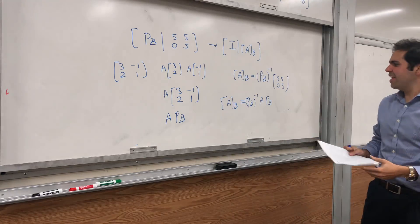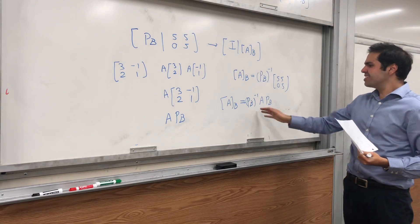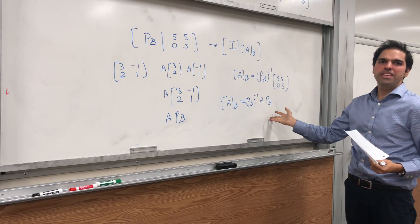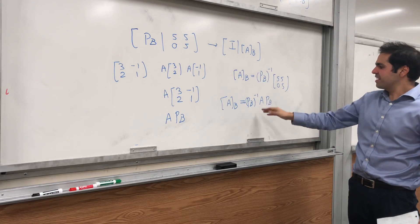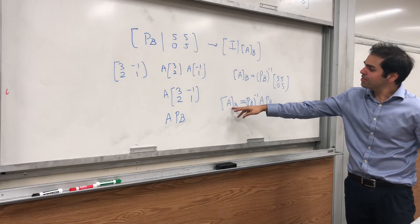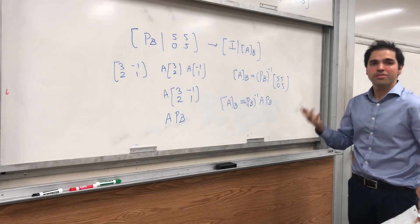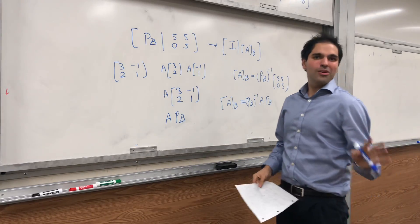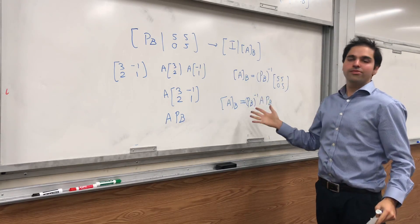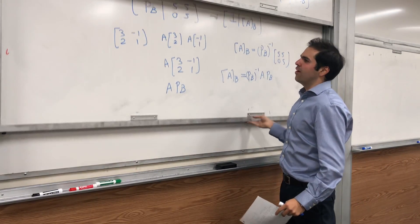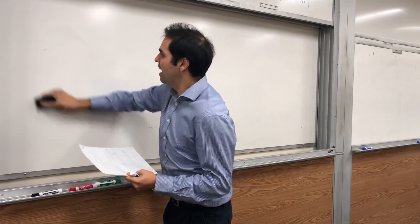And this is why we have this identity, what's called the B-matrix of A is just P_B^{-1}·A·P_B. This is one cool thing where diagonalization comes in, and the real reason why this is important is as follows. In fact, let me try to do it on this last one.